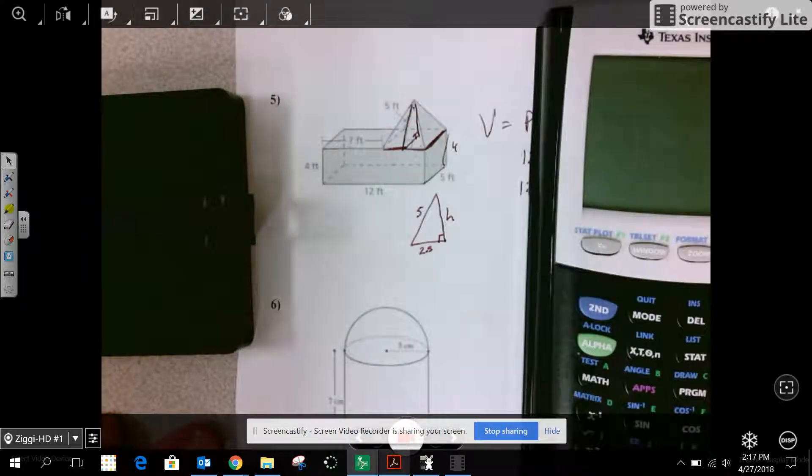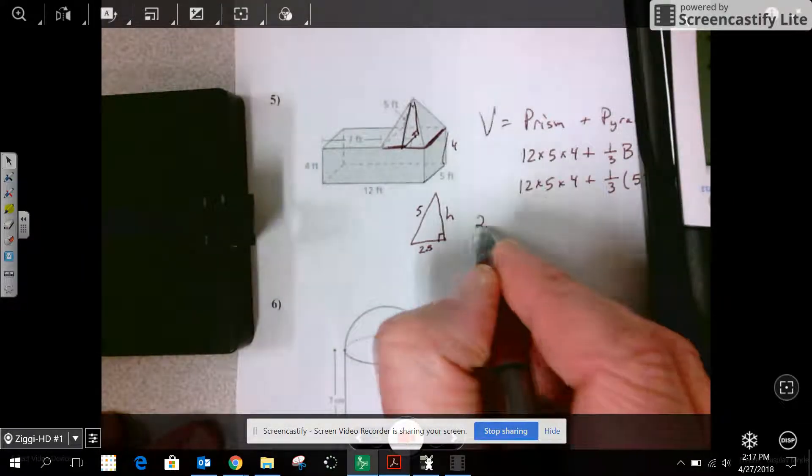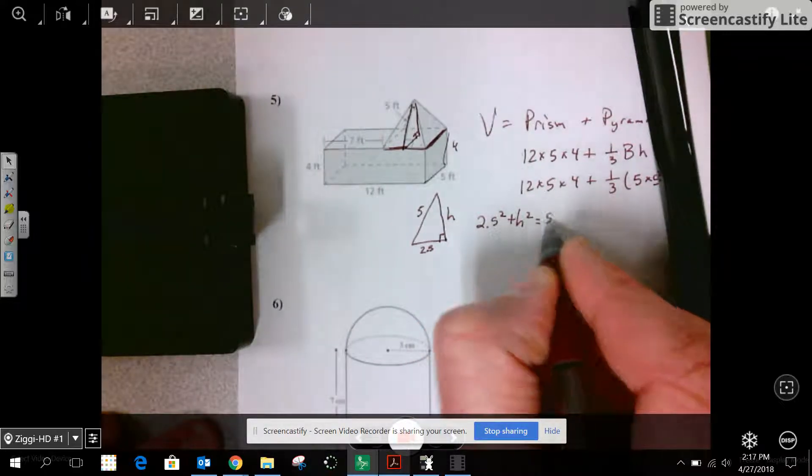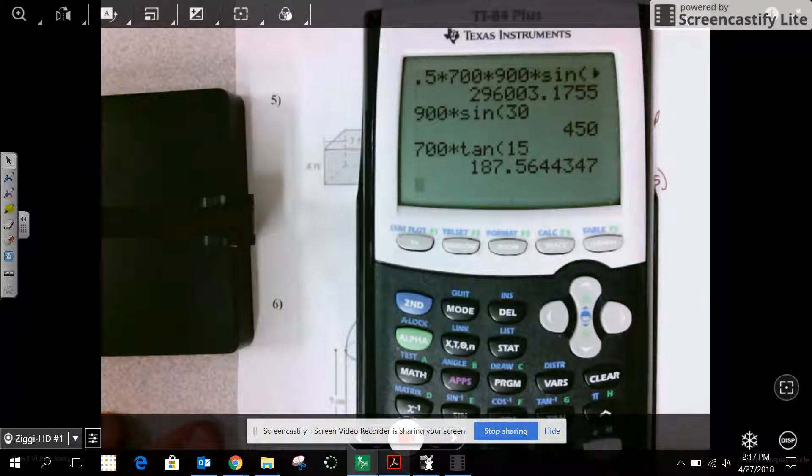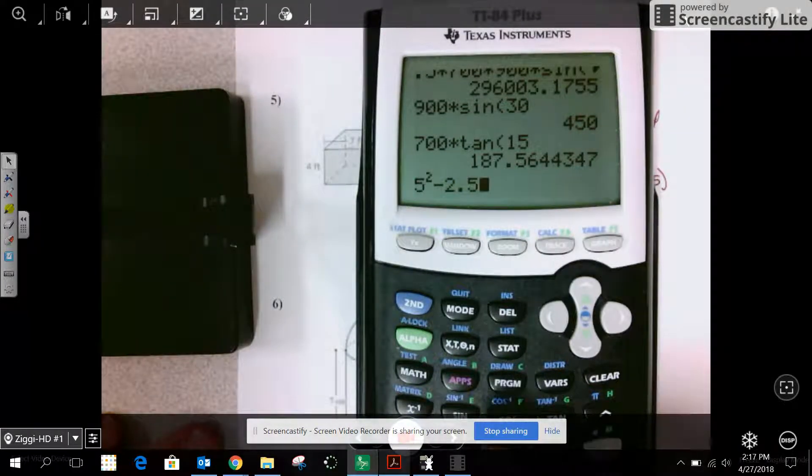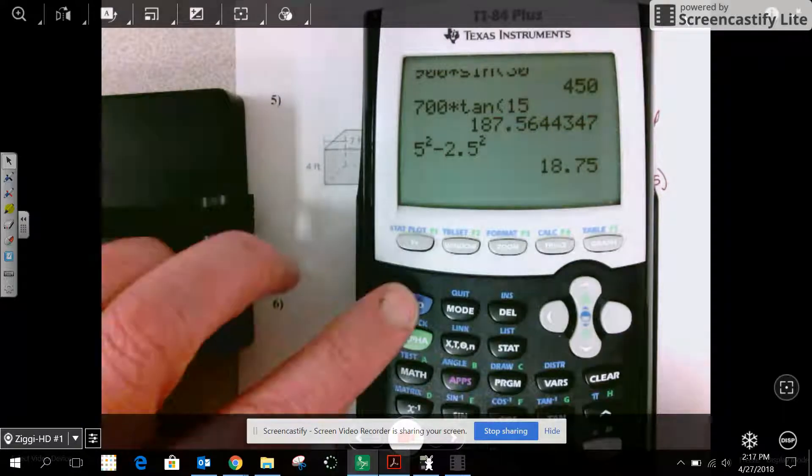So I'm going to do 2.5 squared plus h squared equals 5 squared. So I'm going to be taking 5 squared minus 2.5 squared. Square root.